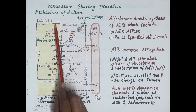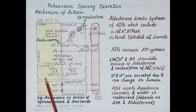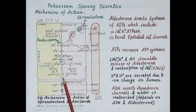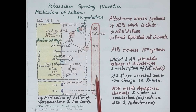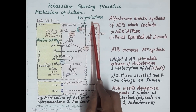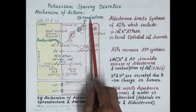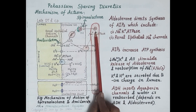The site of action of these drugs is the late distal convoluted tubule and collecting duct. This diagram shows the lumen where filtrate is present, the luminal epithelial cell of the distal convoluted tubule and collecting duct, and the peritubular capillary or vasa recta showing the blood. This epithelial cell has two surfaces: the apical surface facing the lumen, and the basolateral surface facing the peritubular capillary.